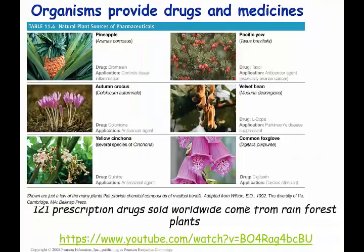Other organisms provide drugs and medicines. The autumn crocus, common in New England, contains a chemical used as an anti-cancer drug and to treat gout. The common foxglove, found in Massachusetts, produces a chemical that helps people who have had heart attacks. In fact, there are about 121 prescription drugs sold worldwide that come from plants in the rainforest. Species and biodiversity provide a lot of these services.